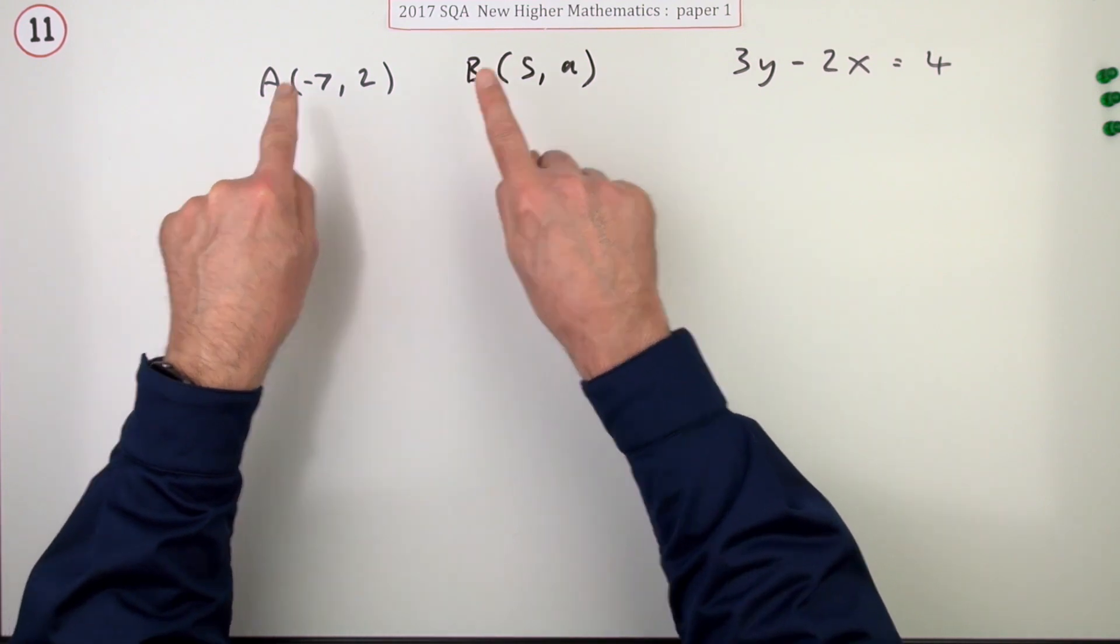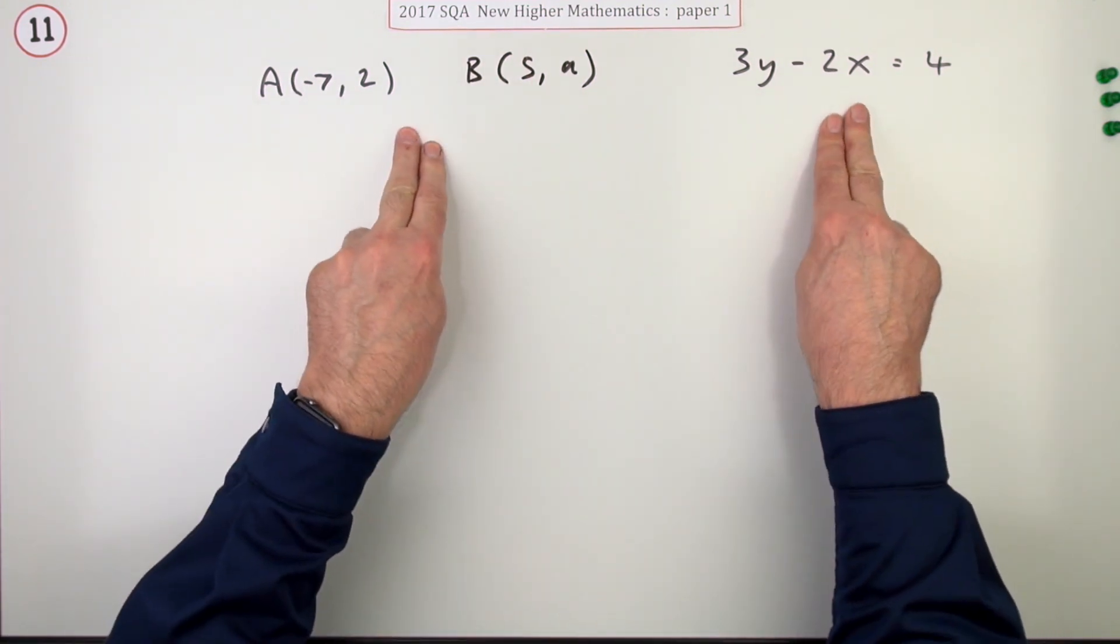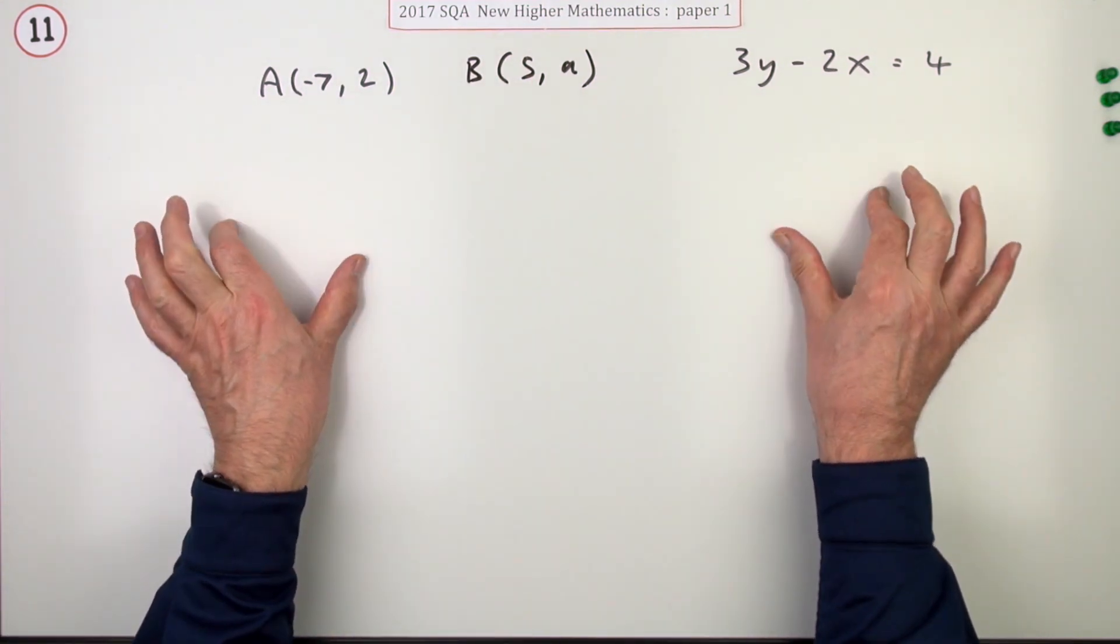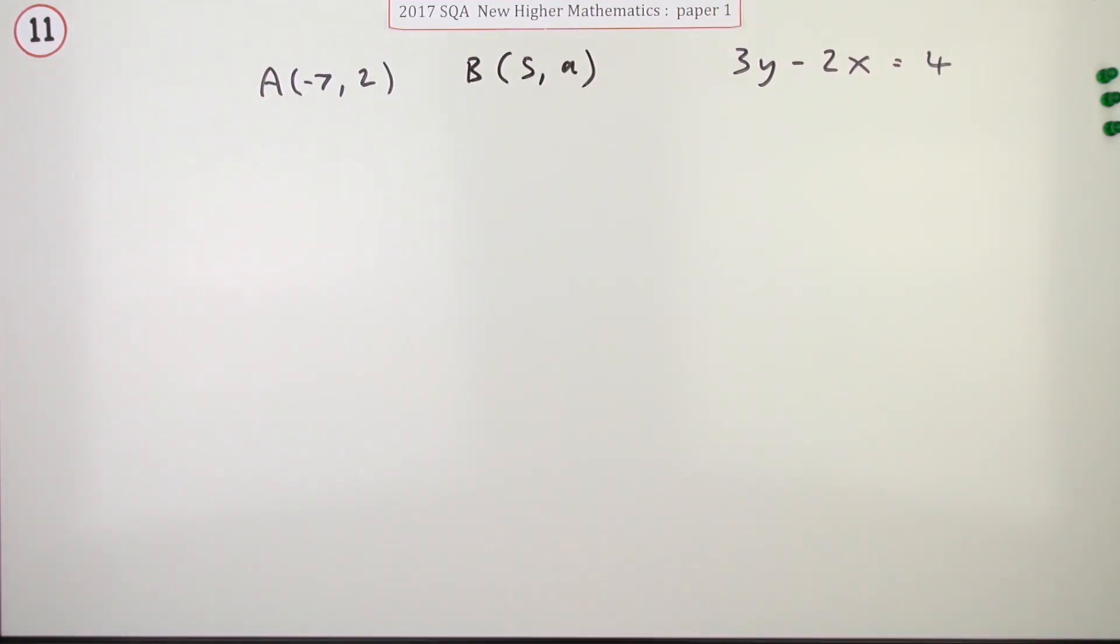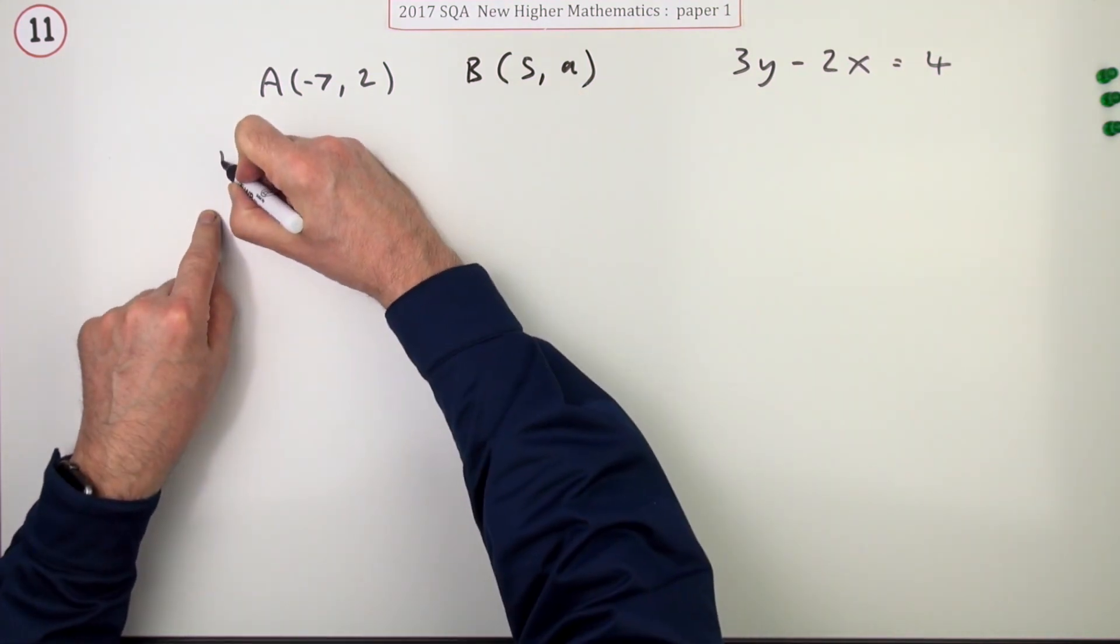Well, an obvious way to go about that would be to say: if that's parallel to this, they've both got the same gradient. So get their gradients and equate them to find this unknown part a. So I'll do it that way. What's the gradient of AB?